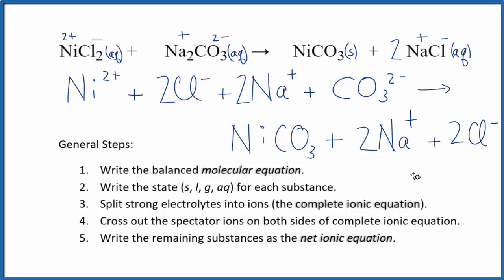Next, we'll cross out spectator ions. These are ions that are on both sides of the equation. They didn't change, so we'll cancel them out. For example, we have 2 chloride ions in the reactants and 2 chloride ions in the products. We'll just cross those out.